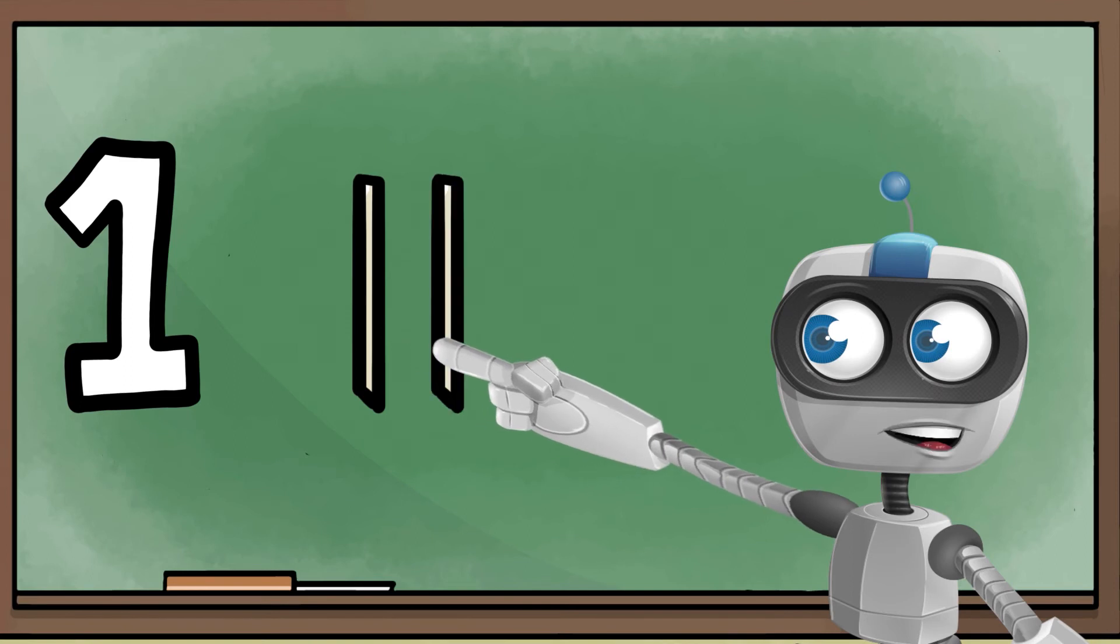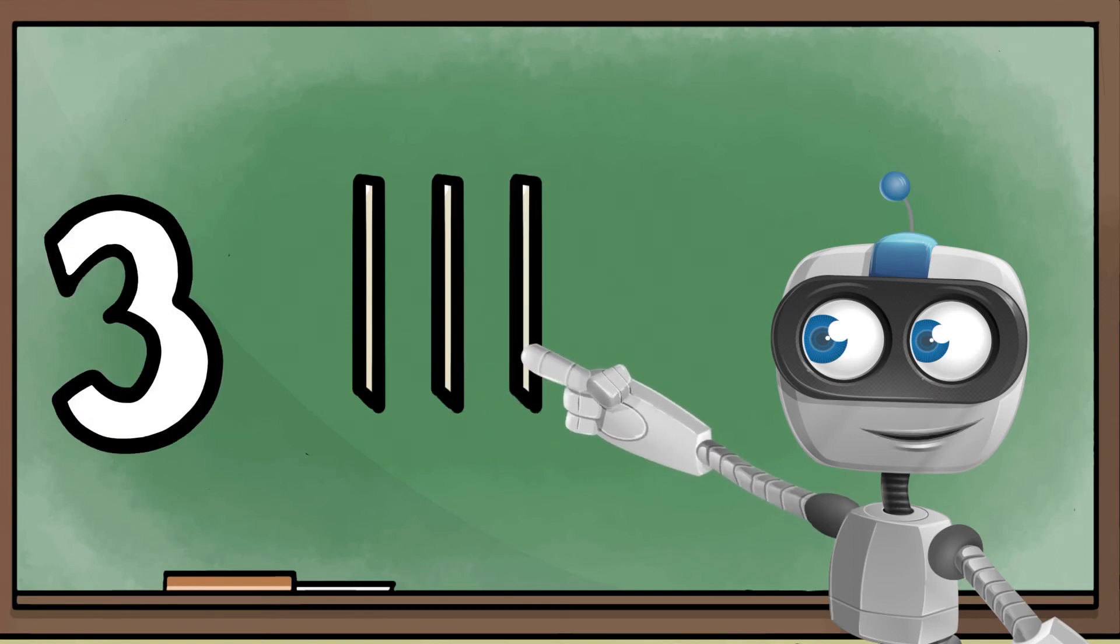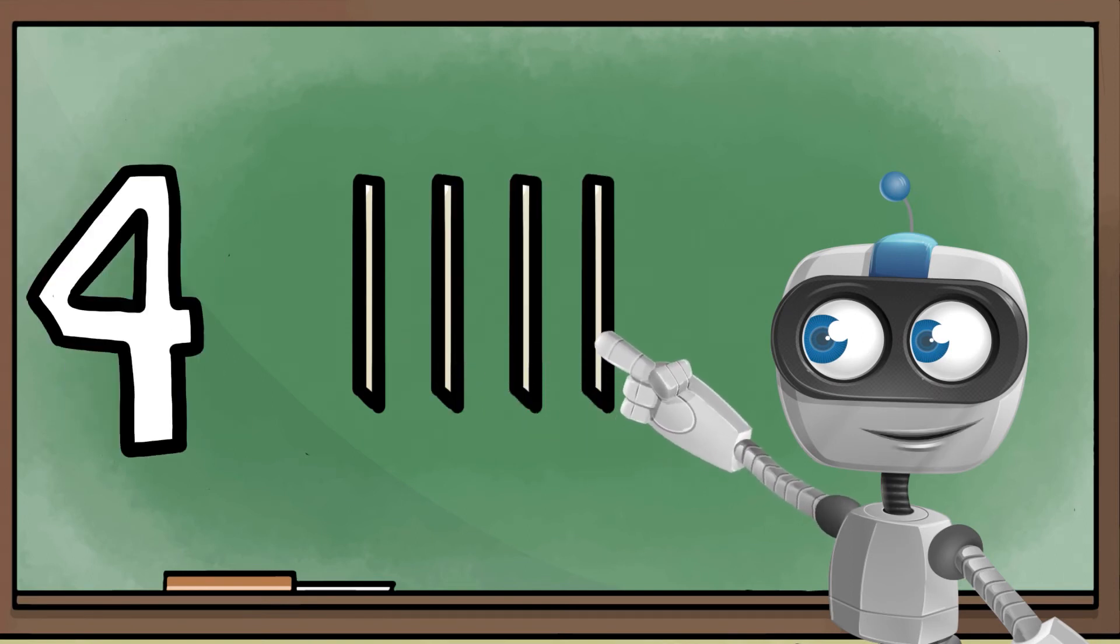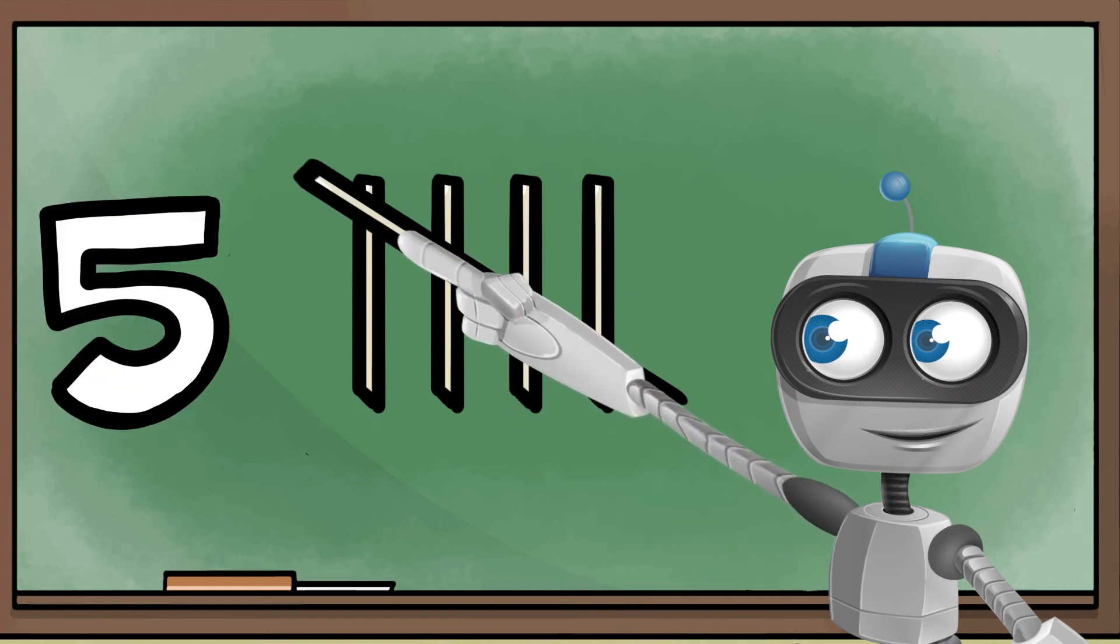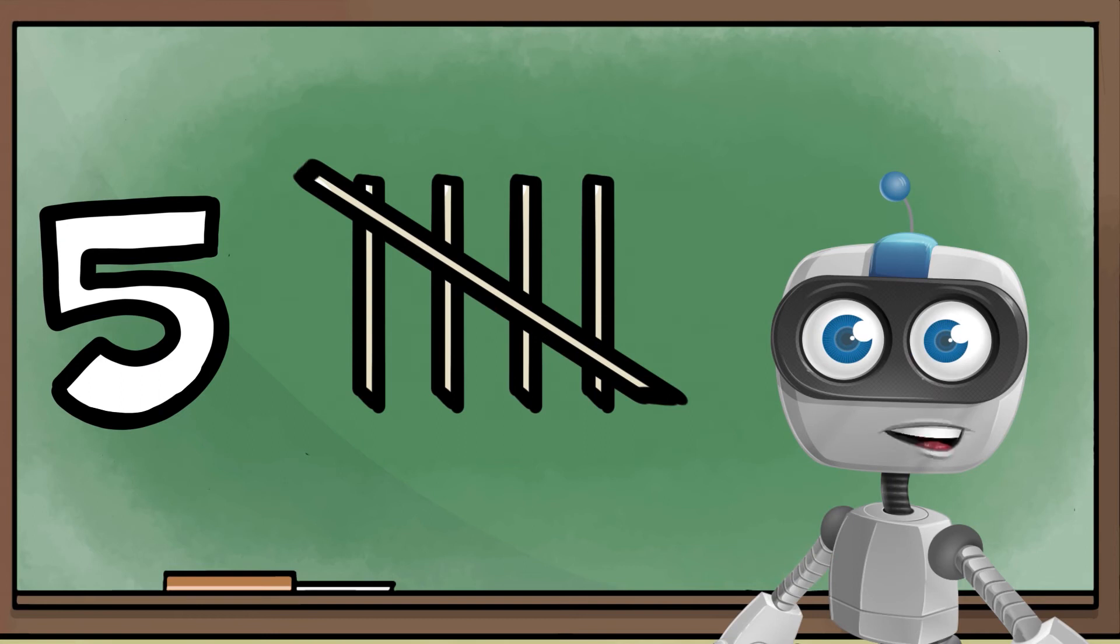One, two, three, four, and then the fifth one goes across it like a seatbelt. This picture shows five tallies.